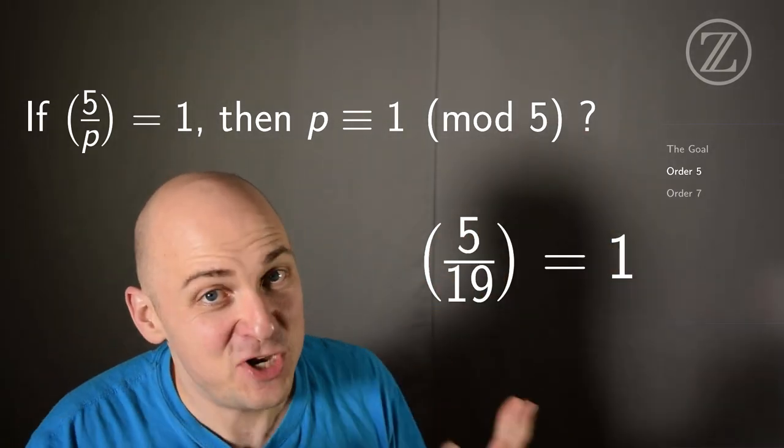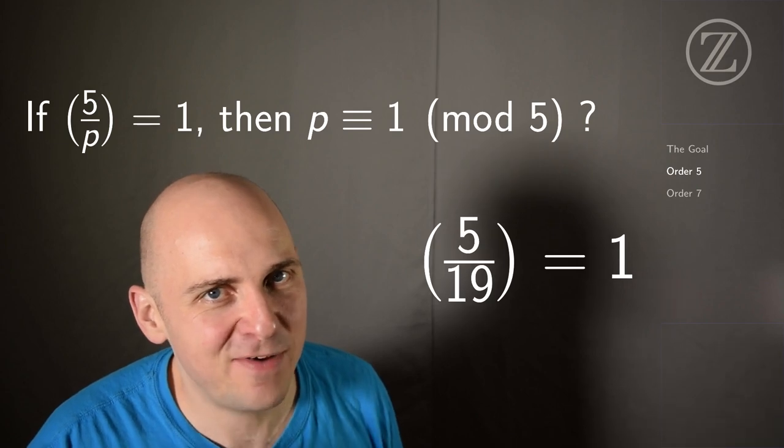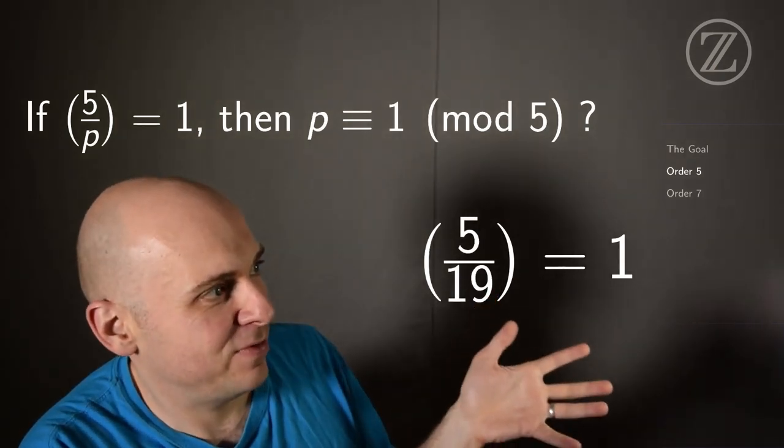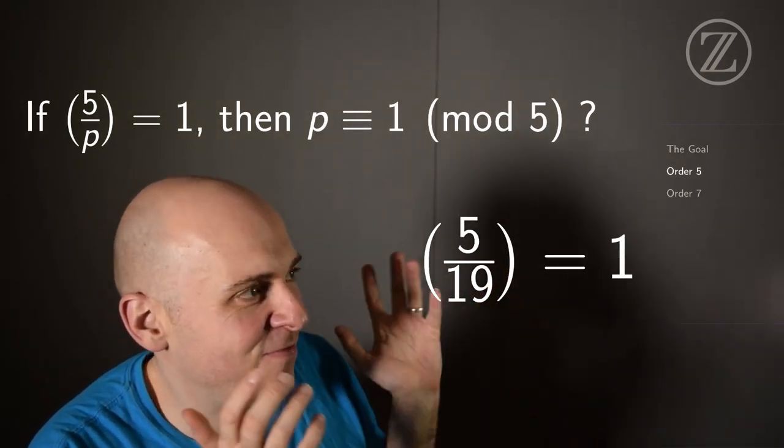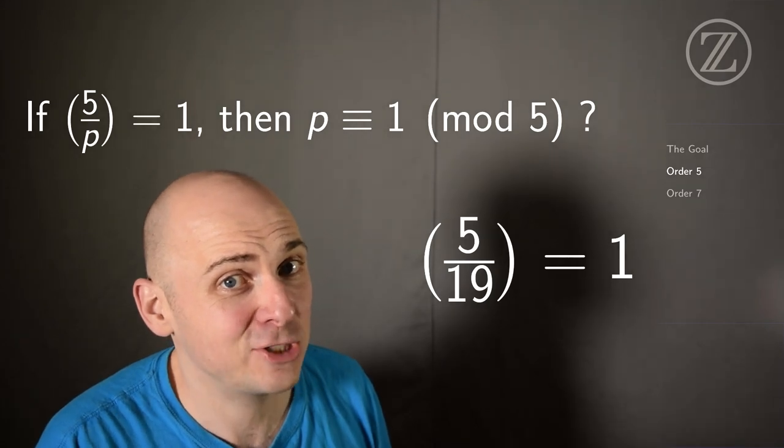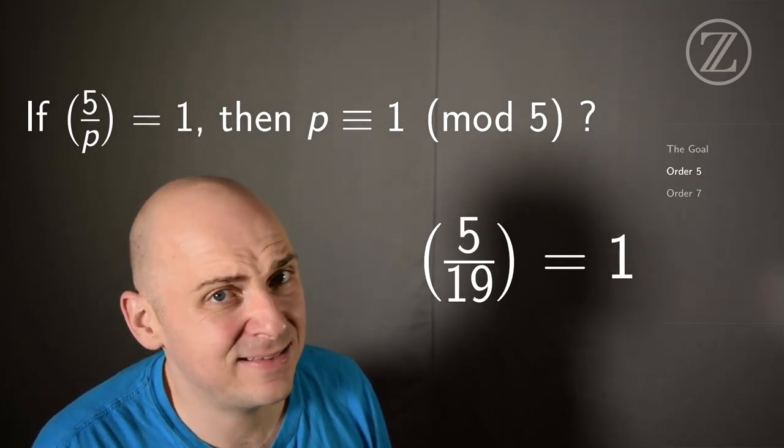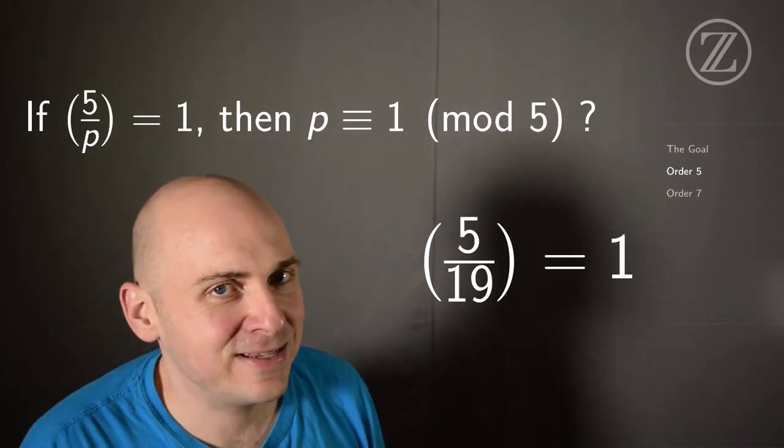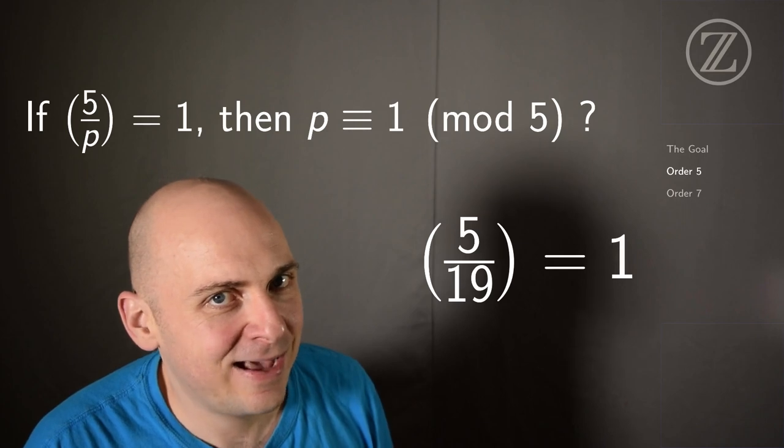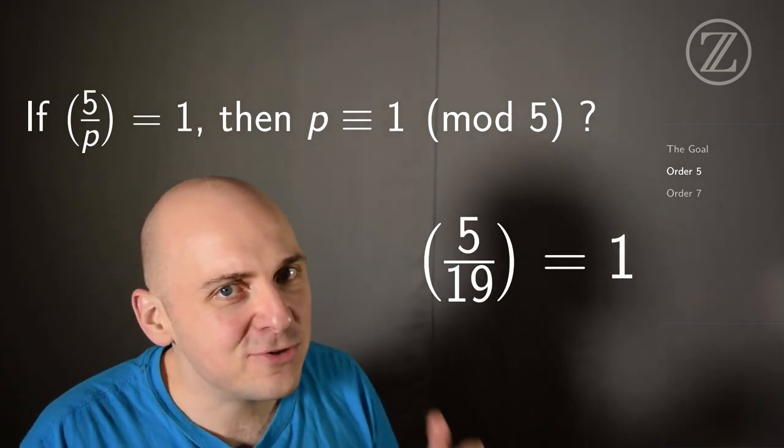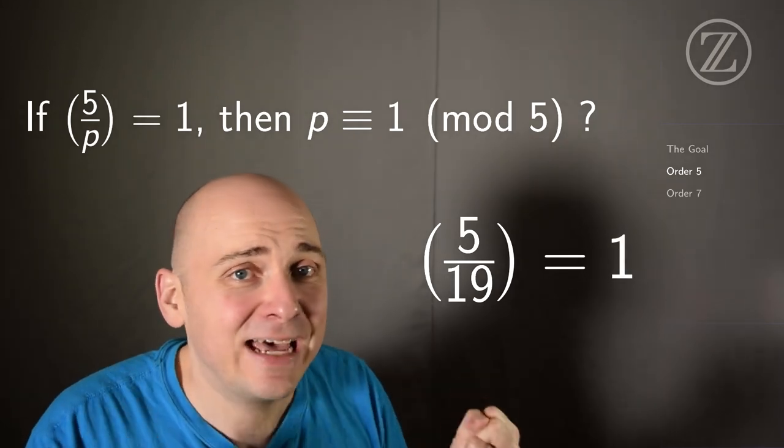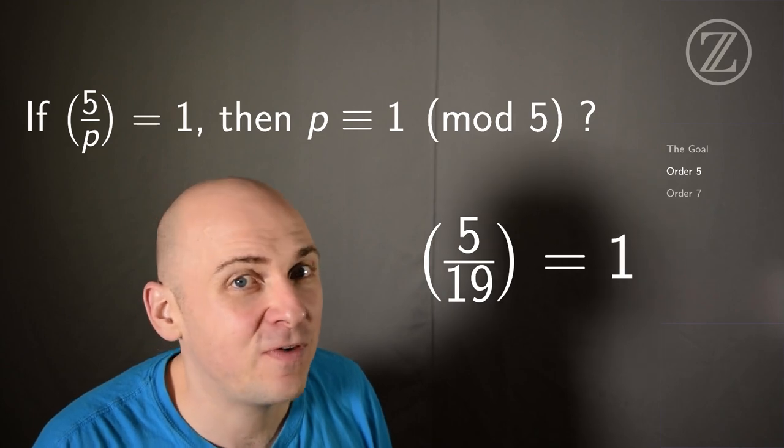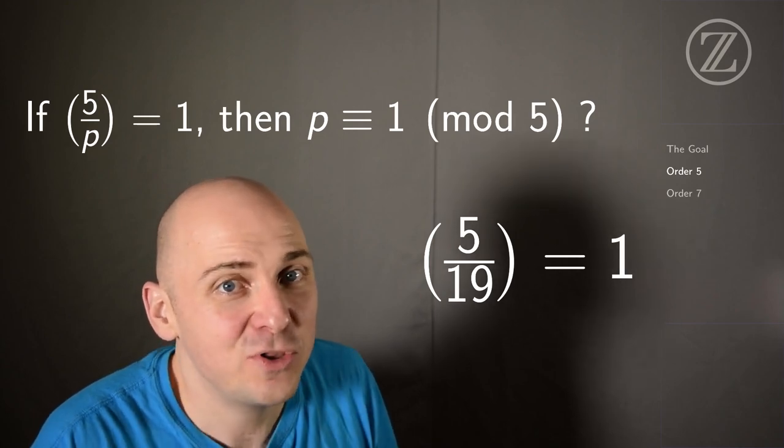But can we go the other way? If we know some prime number p and 5 on p is 1, does that mean that that prime number p is actually 1 mod 5? Well, take a look at this example. This is 5 on 19. And 5 on 19 is 1. 5 is a square modulo 19. It's 10 times 10 is 100, which is 5 mod 19. So the bad news here is that 19 is definitely not 1 mod 5. It's 4 mod 5. So I think there's a lot more that we have to do to really understand even the story for 5 in trying to understand what it means for 5 to be a square mod p.